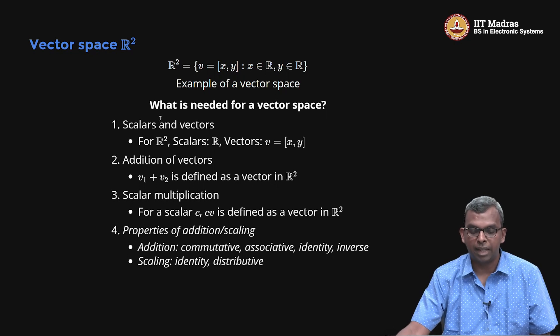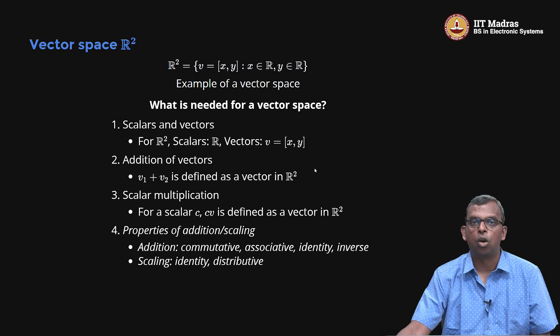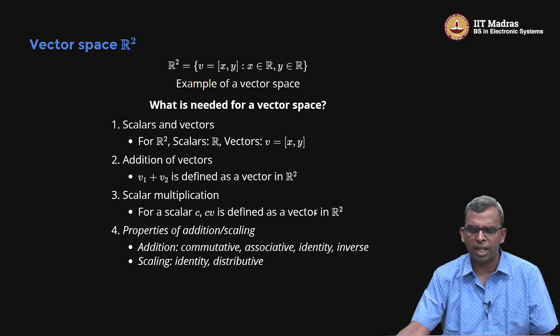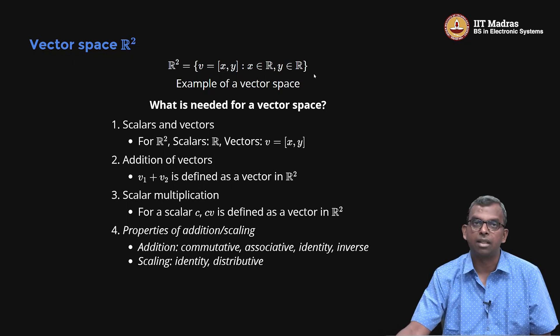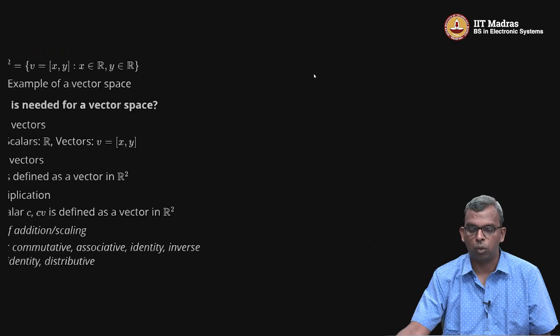So you need scalars, vectors, operations, and the required properties for those operations. All these properties are satisfied for R2, and that is what makes it a vector space.